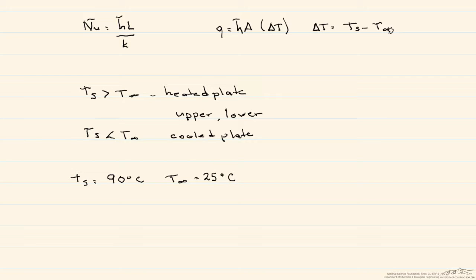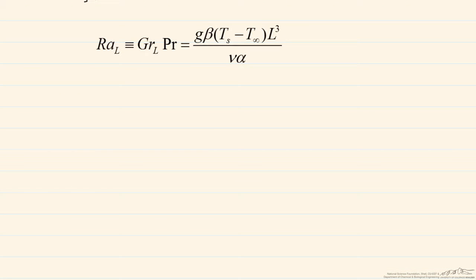As I mentioned before in screencast, the dimensionless parameter that guides free convection is what's known as the Rayleigh number. Some of the properties that we're going to have to look up include the kinematic viscosity, the thermal diffusivity, as well as the thermal expansion coefficient.